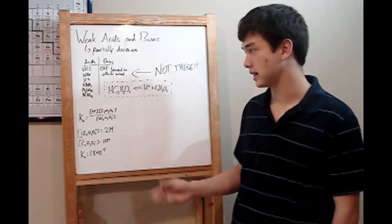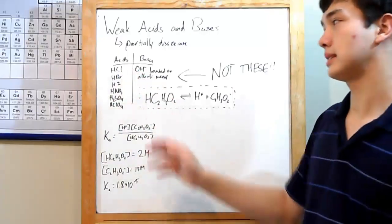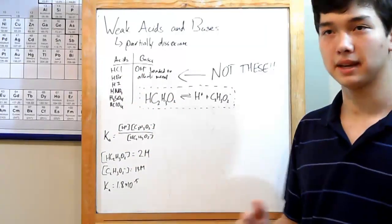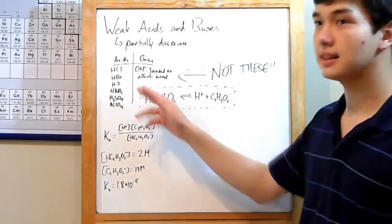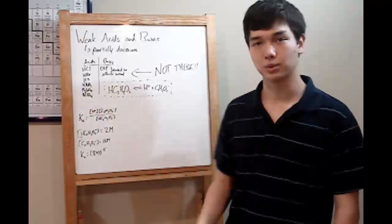How do you tell if you've got a weak acid or base? Well, these are the strong acids and bases. A weak acid and base is any acid and base that is not these. So just remember that rule.